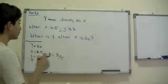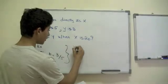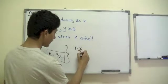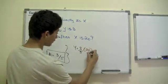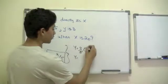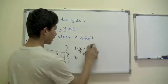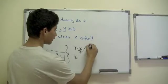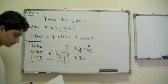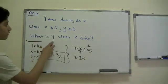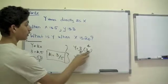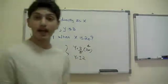Now to find y when x = 20: we know k = 3/5 and x = 20. So y = (3/5) times 20. Since 5 goes into 20 four times, 3 times 4 gives us 12. So when x = 20, y = 12. It's as simple as that.